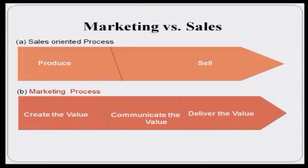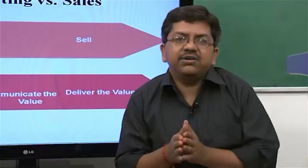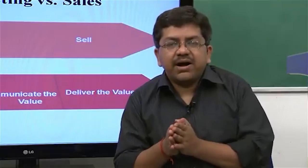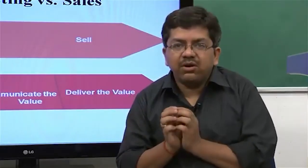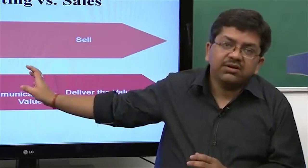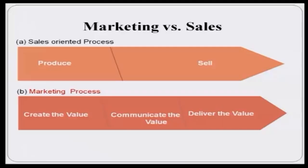Now we will try to explain the difference between marketing and sales. As this picture depicts, a sales-oriented process is focused on producing the product and then going and selling it to the customer, whereas a marketing-oriented process will have more focus on creation of value and then communicating and delivering it.